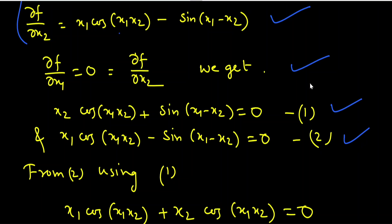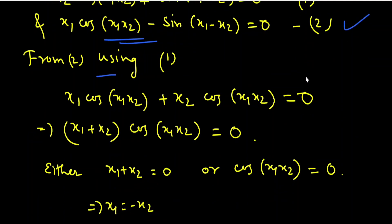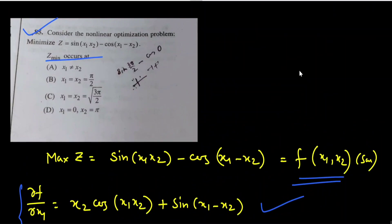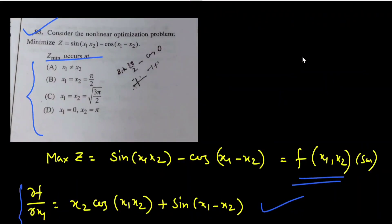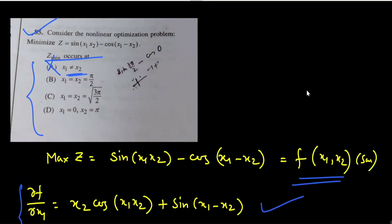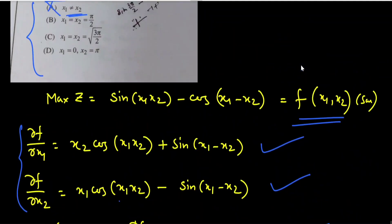Setting ∂f/∂x₁ = 0 and ∂f/∂x₂ = 0, substituting sin(x₁ − x₂) from equation 1 into equation 2, we get (x₁ + x₂)·cos(x₁x₂) = 0. Two cases: either x₁ + x₂ = 0, giving x₁ = −x₂ (no such option given, so discarded), or cos(x₁x₂) = 0. Checking option A (x₁ ≠ x₂, no specific values) — not applicable. Checking x₁ = x₂ = π/2: cos(π²/4) ≠ 0, discarded.